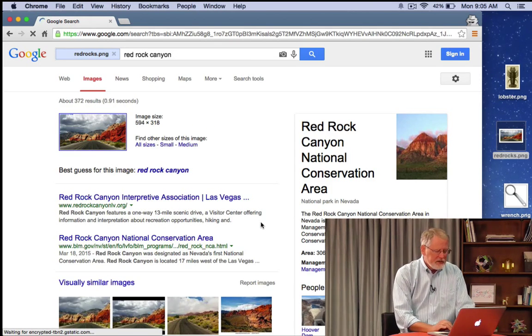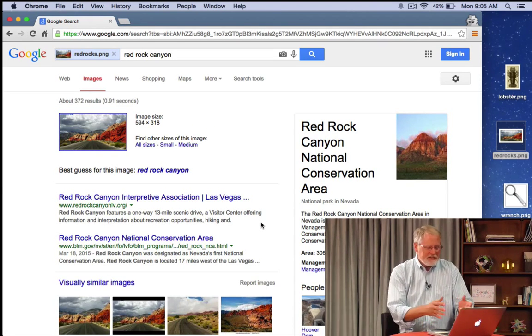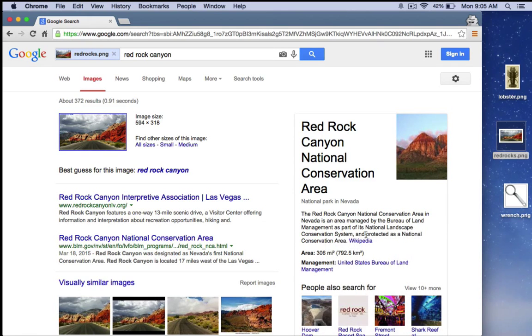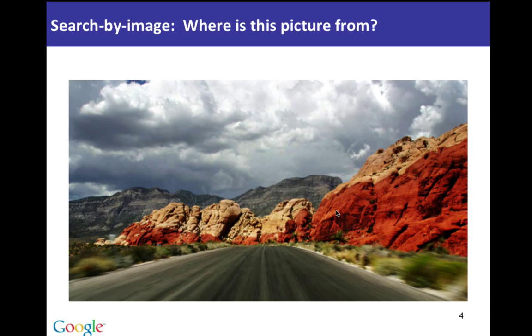So you'll quickly discover that the answer is it's in the Red Rock Canyon National Conservation Area, which is, as you can read on here, just outside of Las Vegas, Nevada. Now, it's not obvious because this is not your typical Las Vegas picture. But by using Search by Image, we can discover, again, the best description of it and links to other information about that region. So you get the idea.